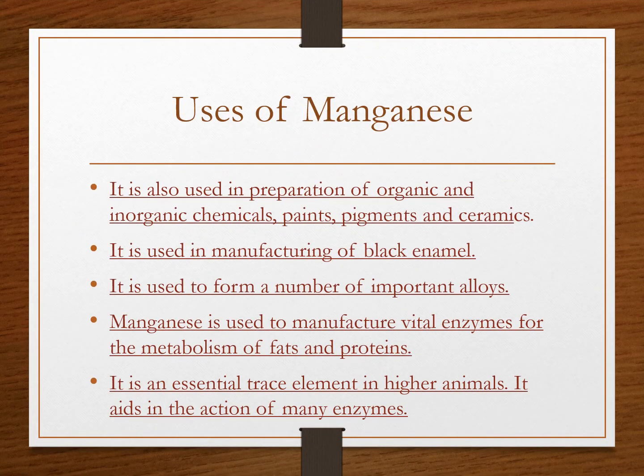Manganese is also used in preparation of organic and inorganic chemicals, paints, pigments, and ceramics. It is used in manufacturing of black enamel and to form a number of important alloys. Manganese is also used to manufacture vital enzymes for metabolism of fats and proteins. It is an essential trace element in higher animals and aids in the action of many enzymes.